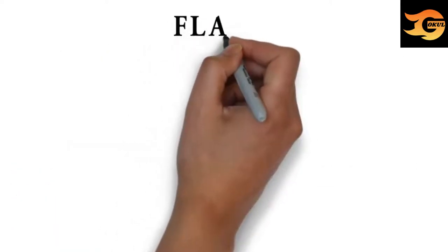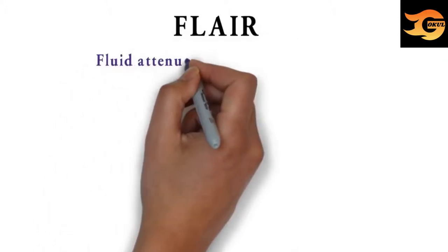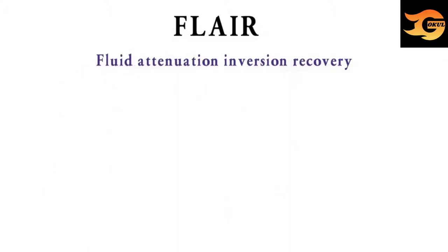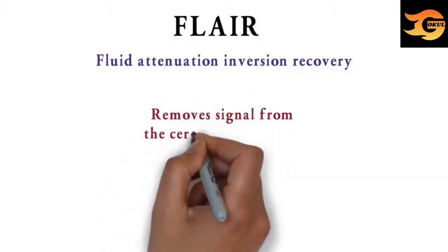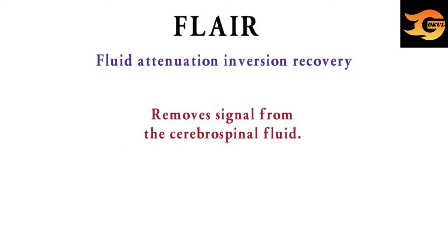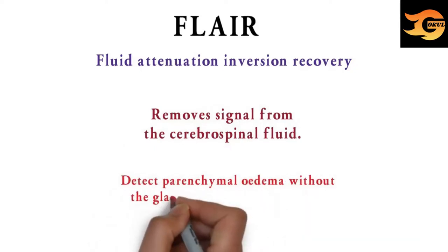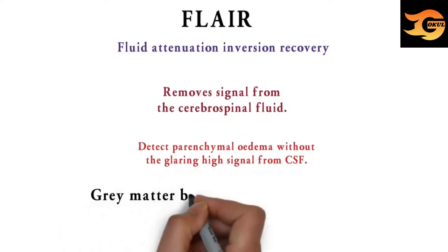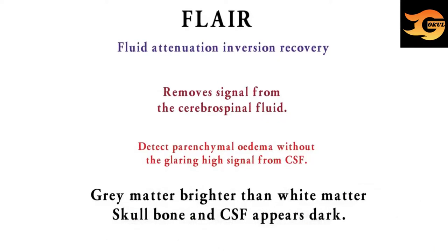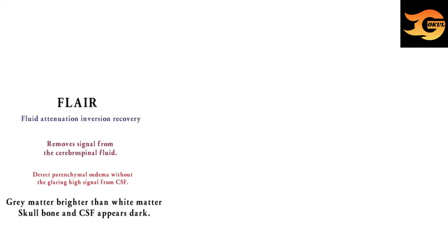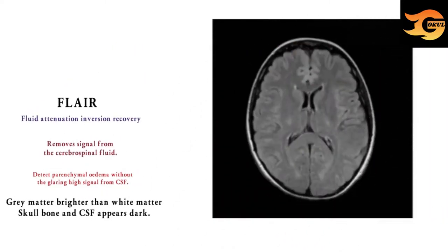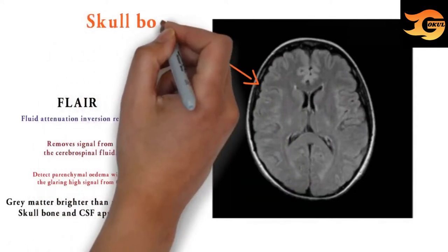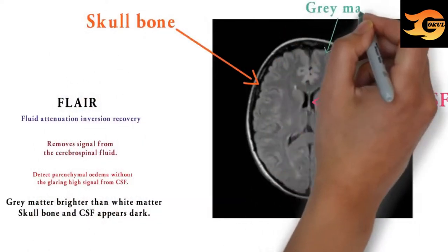One more important sequence of MRI is FLAIR sequence, that is Fluid Attenuation Inversion Recovery. This is a special inversion recovery sequence with a long inversion time. It removes signal from the cerebrospinal fluid and is usually used to detect parenchymal edema without the glaring high signal from CSF. In FLAIR MRI, grey matter appears brighter than white matter, and skull bone and CSF both appear dark.